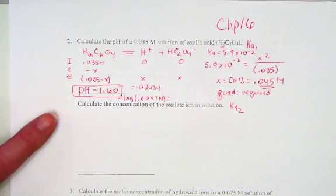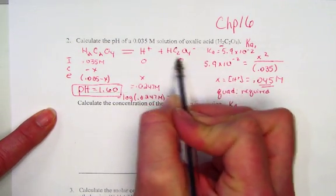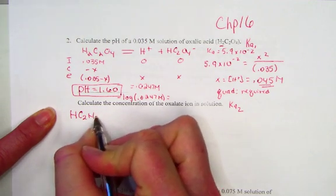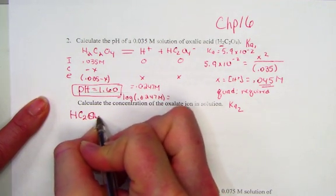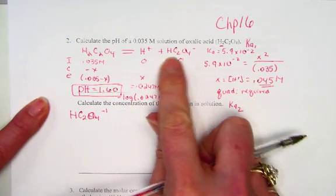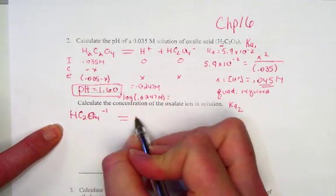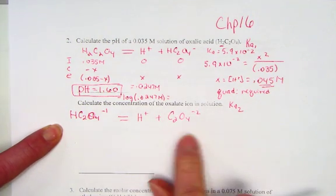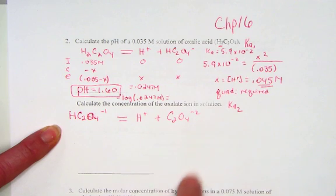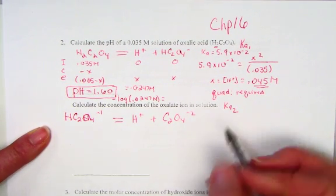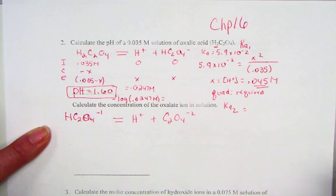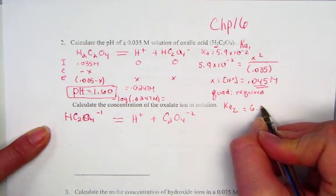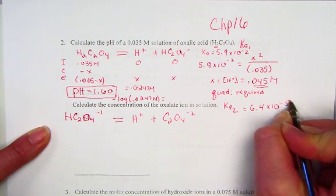To continue this question, we carry on with the polyprotic acid here, HC2O4-. The hydrogen oxalate ion releases its second hydrogen to form the oxalate ion, C2O4-2. We mentioned that this would represent the second ionization constant, and using our appendix D, we found Ka2 to be 6.4 times 10 to the negative fifth.